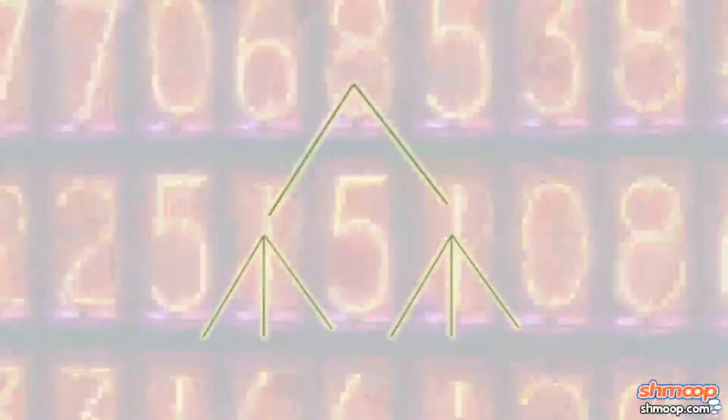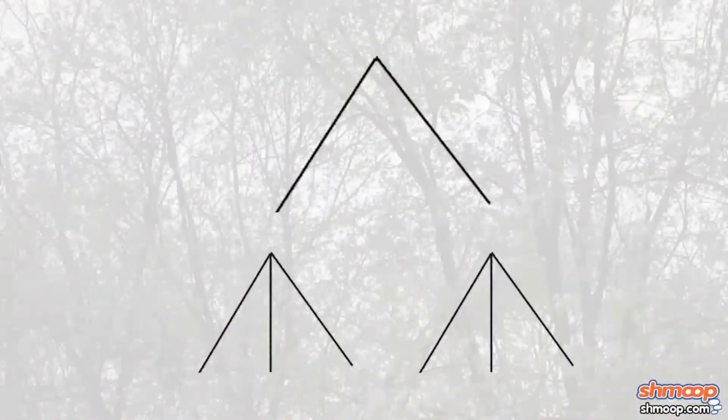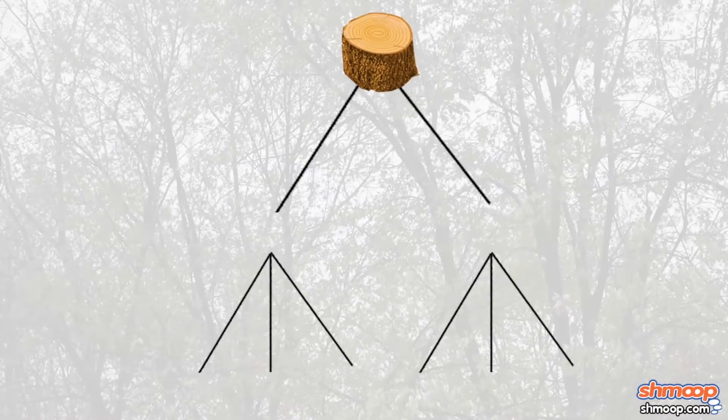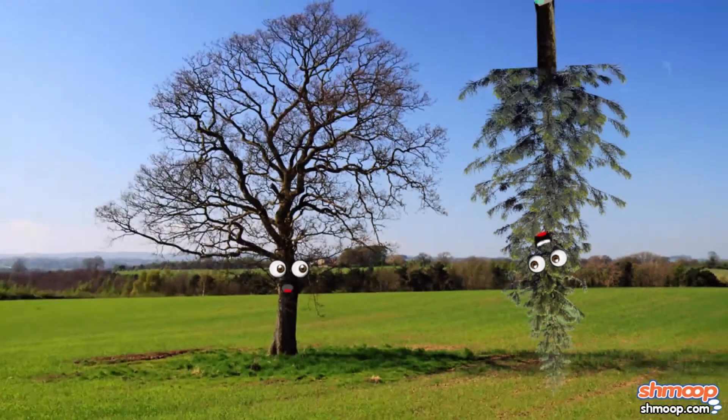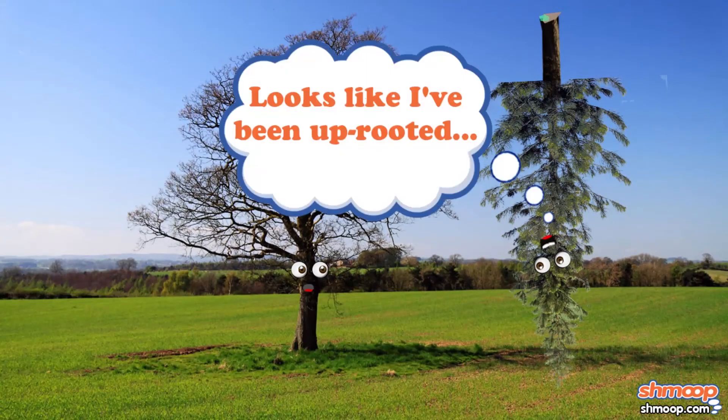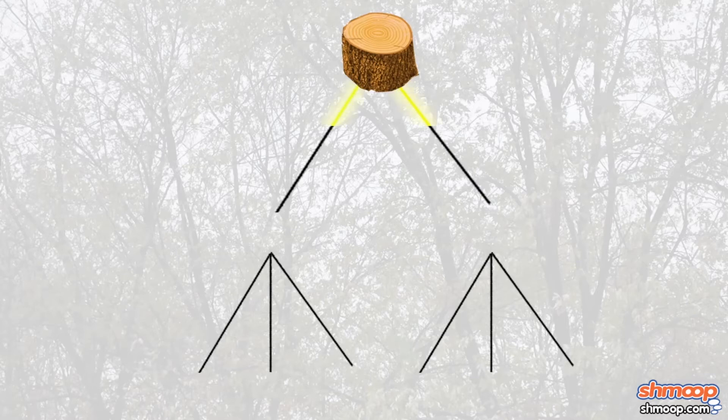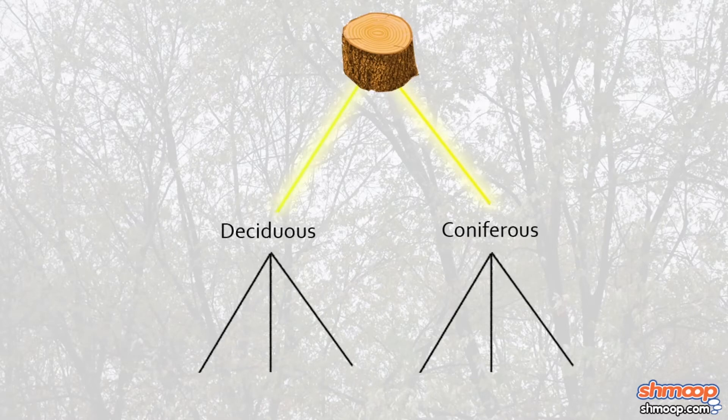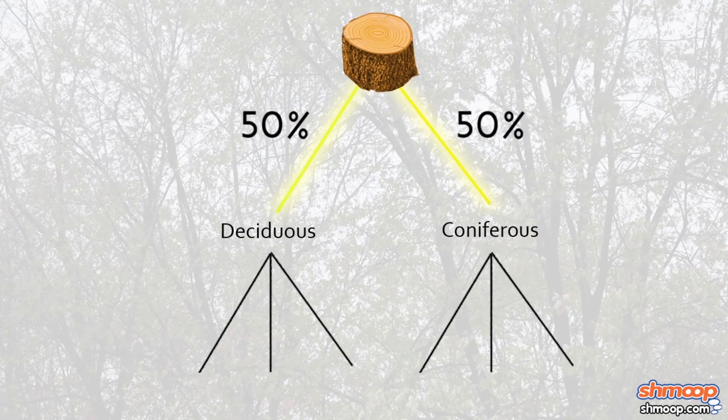We can find all the possible combinations by making a tree. Yeah, one of these things. We'll start with our trunk at the top. Our tree is a little inverted. And we have two main branches, deciduous and coniferous, each with a 50-50 chance of being chosen. So we'll label each 0.5s.